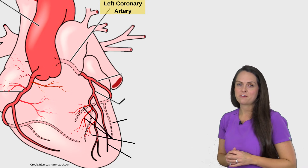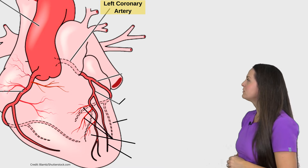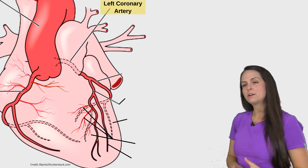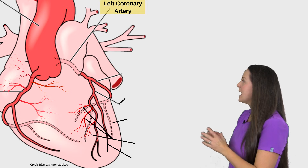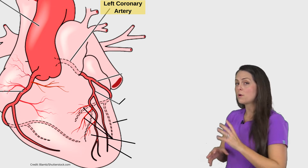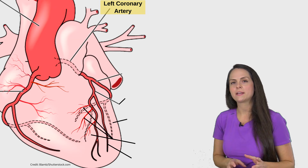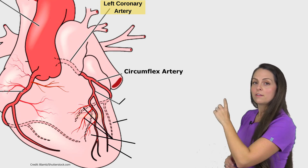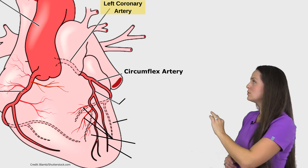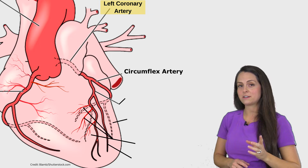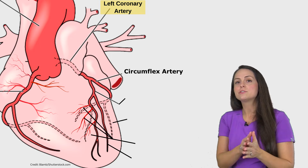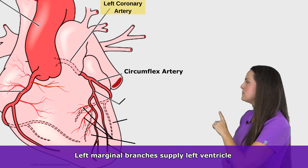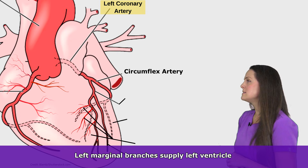Now let's look at the left coronary artery. We're still viewing the anterior view of the heart. Just like the right coronary artery, the left coronary artery comes off the ascending aorta and turns into two main branches with smaller branches. One of those big branches is called the circumflex artery. This artery comes off the left coronary artery and circles around onto the posterior side — so let the name help you: circumflex means circle. It supplies our left atrium and some of our left ventricle.